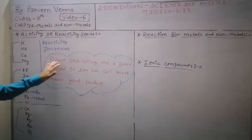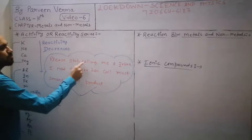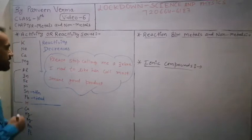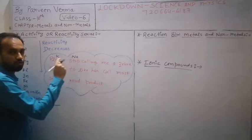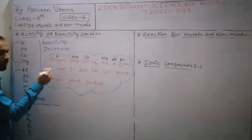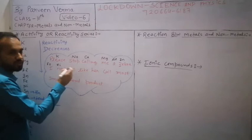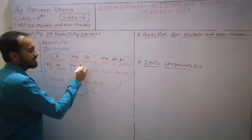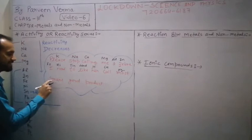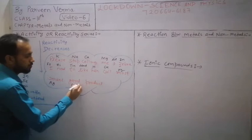Here I have made a shortcut with whose help we can remember this. That shortcut is: Please Stop Calling Me A Zebra, I Need To Like Her Coal Most Smart Good Product. Look, Please for potassium, Stop for sodium, Calling for calcium, Me for magnesium, A for aluminium, Zebra's Z for zinc, I for iron, Need for nickel, To for tin, Like for lead, Her H for hydrogen, Coal for copper, Most M for mercury, Smart S for silver, Good G for gold, Product P for platinum. So in this way you can learn the shortcut here.